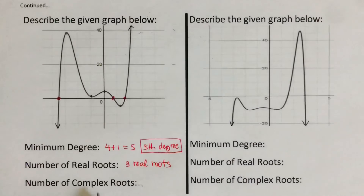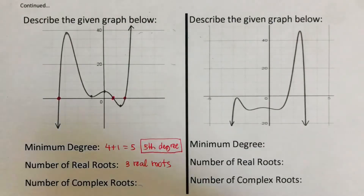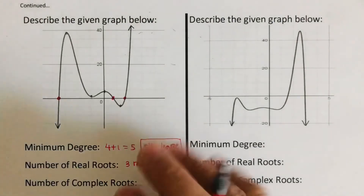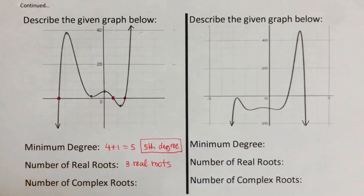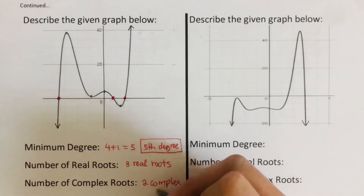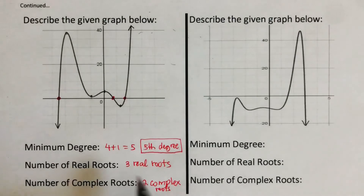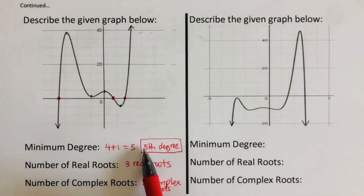To determine the complex roots, we subtract the real roots from the minimum degree: five minus three equals two. So there are two complex roots. Two complex roots plus three real roots equals five, which matches the minimum degree.